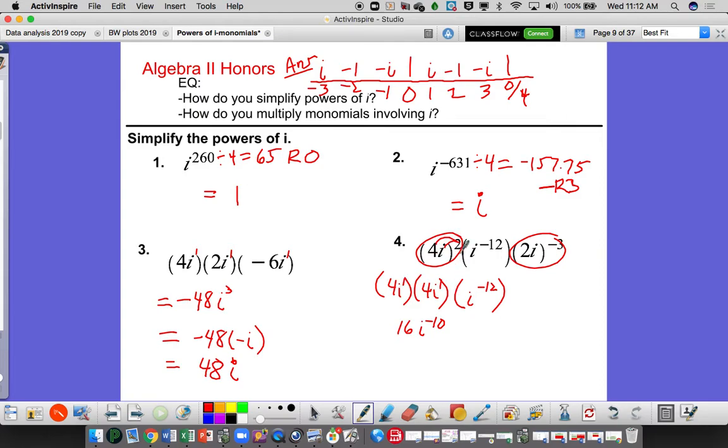4 squared. 4 times 2. It's 2 of everything in here. It's two 4s multiplied together, and two i's multiplied together. So over here, what we're going to do is we're going to take 2 to the negative 3rd power, and we're also going to take i to the negative 3rd power.